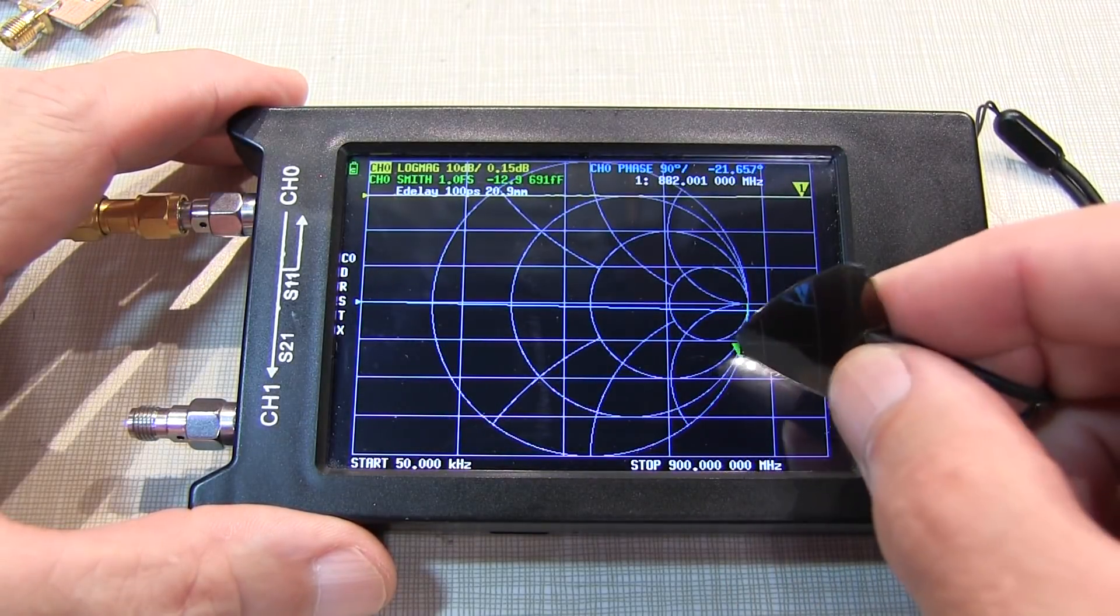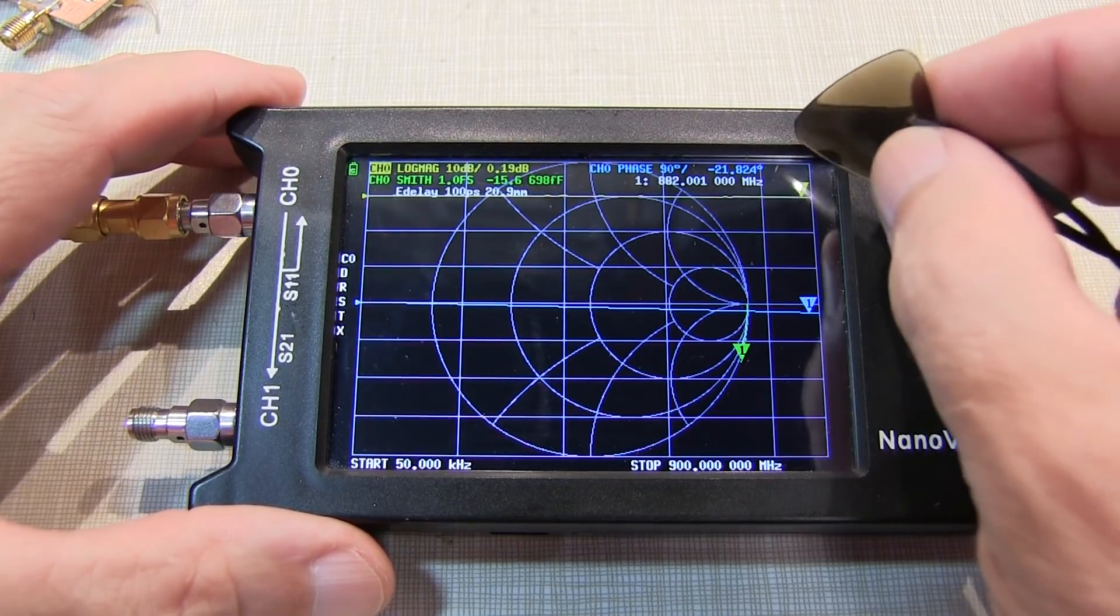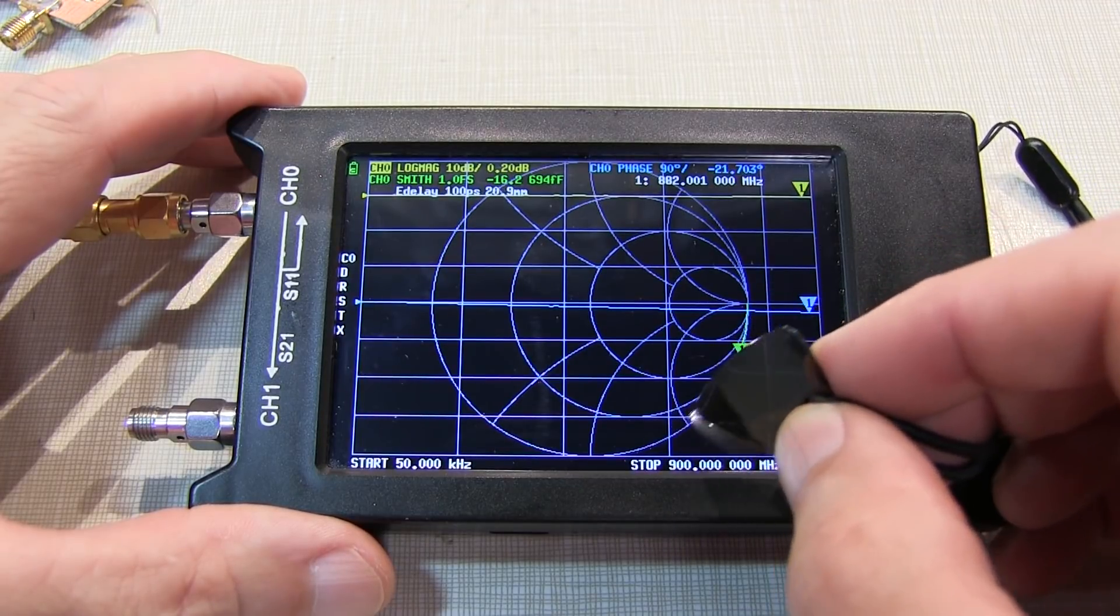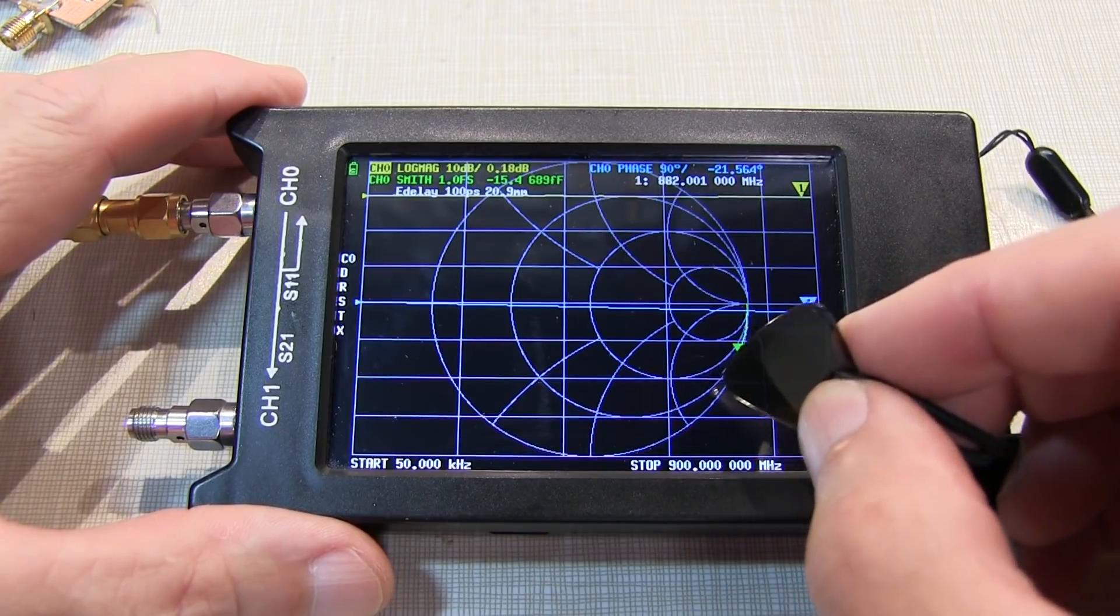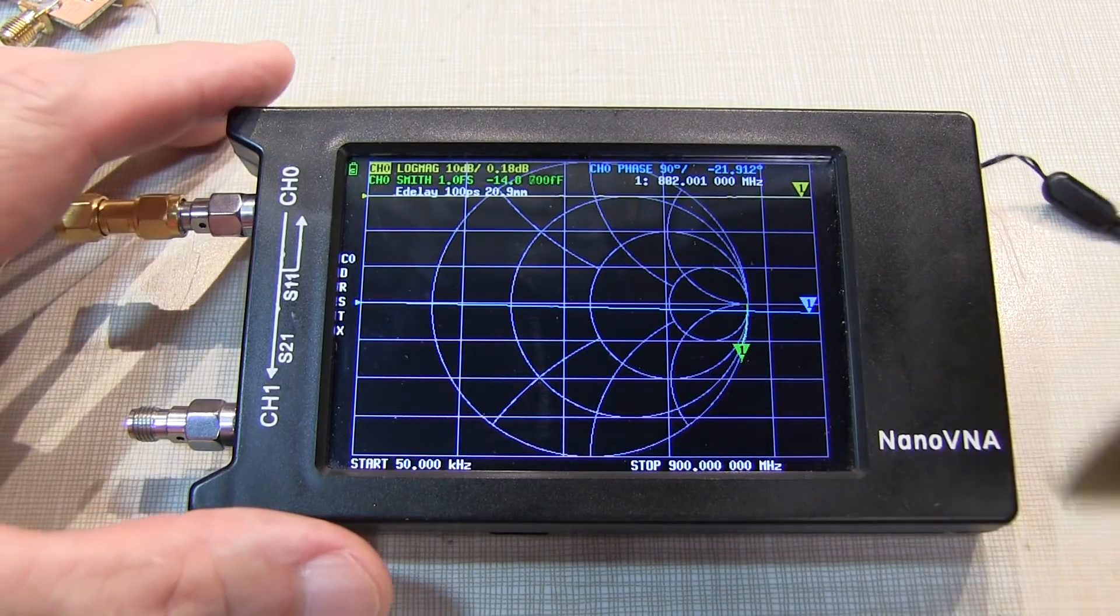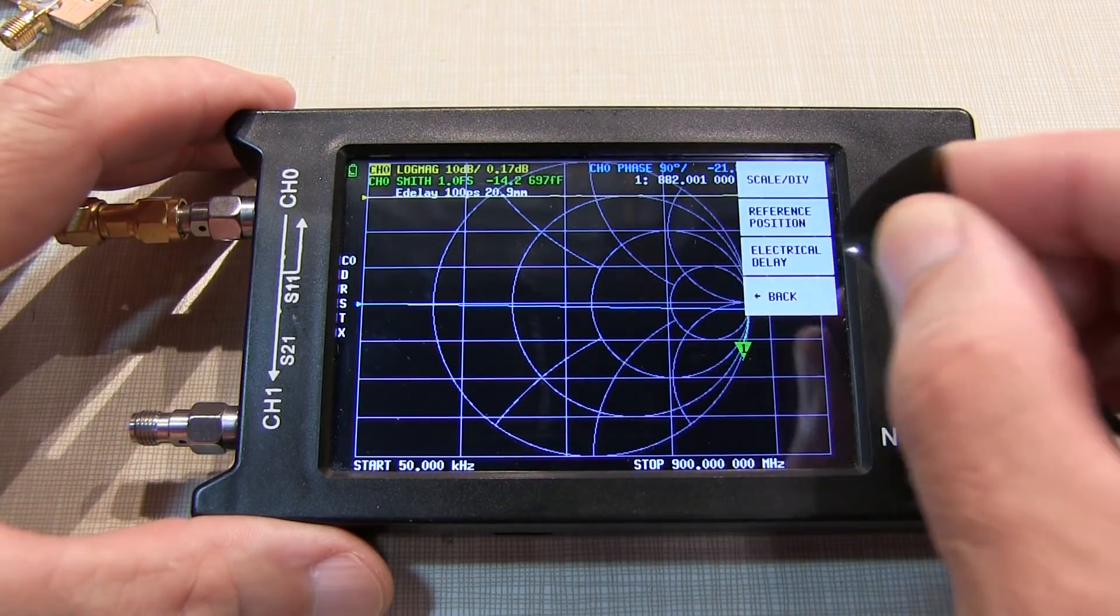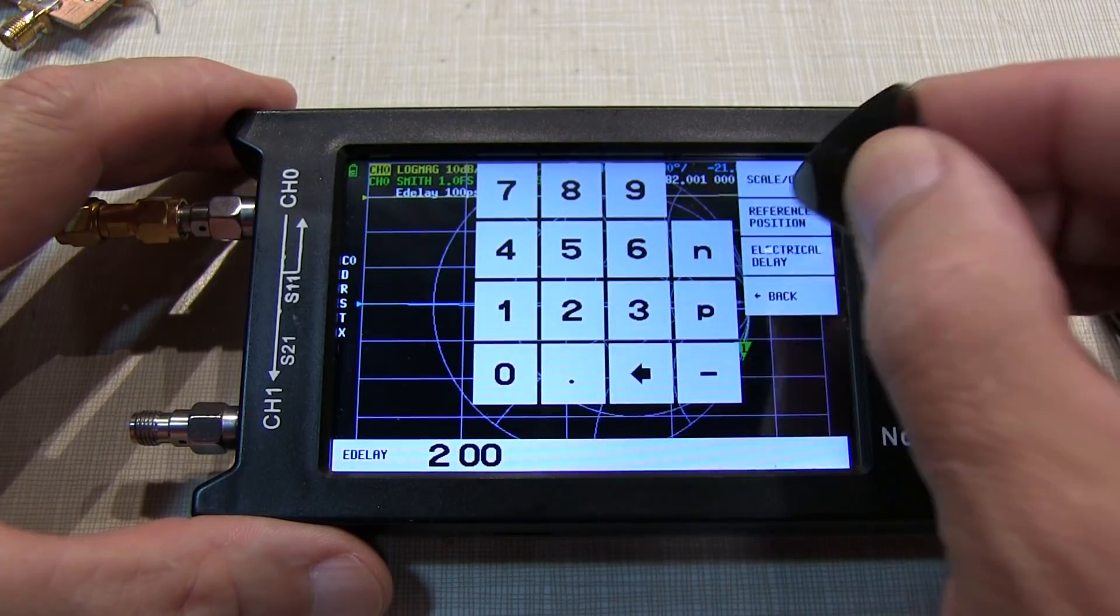So with 100 picoseconds of delay, we can see we've flattened the phase out. It's not quite back to zero. We're sitting now at about 21 degrees. And you also can see that the arc that we draw out on the Smith chart has now been reduced. So 100 picoseconds got us part of the way there, but not all the way. Okay, 100 picoseconds wasn't enough. Let's add 200 picoseconds instead. So we'll dial in 200. 200 picoseconds.